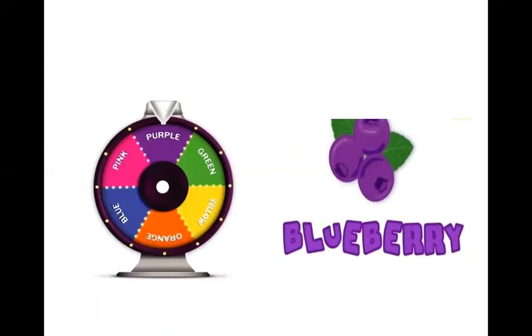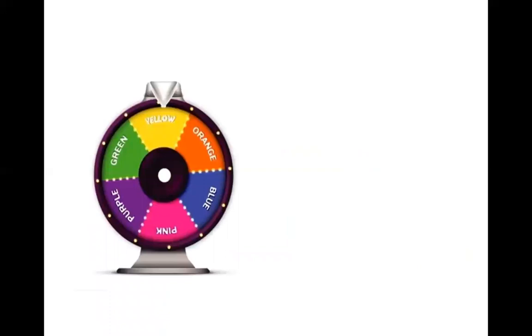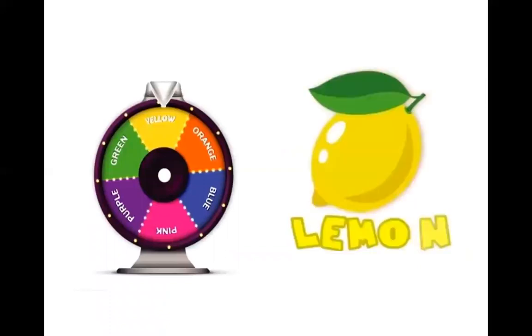Next is purple color blueberry. Can you see the blueberry? So what color ice cream are we going to get from blueberry? Purple color ice cream! Well done. Now next is yellow — can you see the fruit? It's a lemon, and lemon is yellow, so what color ice cream are we going to get? Yellow ice cream!